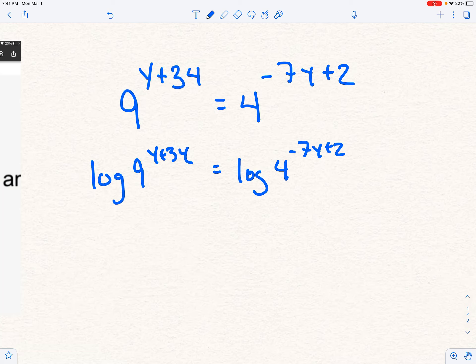is log of 4 to the negative 7y plus 2. Now, I'm going to use the copy-paste. Actually, no, I'm not. So y plus 34 goes in front. I'm going to use parentheses and log of 9, and then negative 7y plus 2 log of 4.